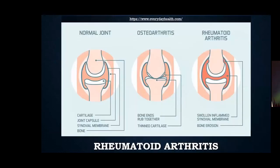A second autoimmune disease I looked at was rheumatoid arthritis. RA involves inflammation in the joints and overexpression of cytokines — cells of the immune system that signal other cells. These cytokines increase white blood cell production and as a result increase the level of osteoclasts, which are cells that break down bone. In a healthy person there is a balance between osteoclasts and osteoblasts, the cells that build bone. RA is known to affect 41 out of 100,000 people.